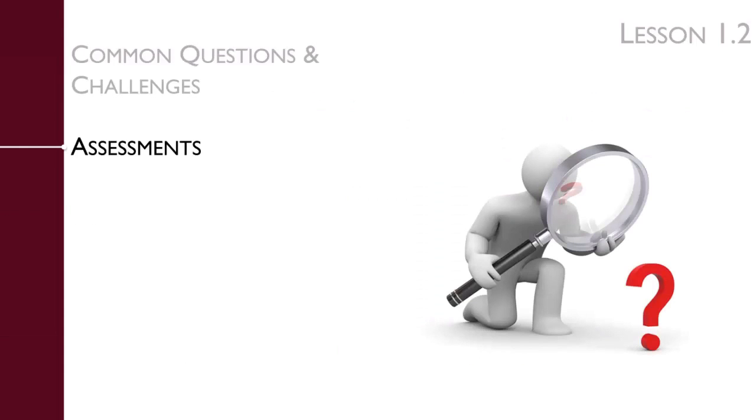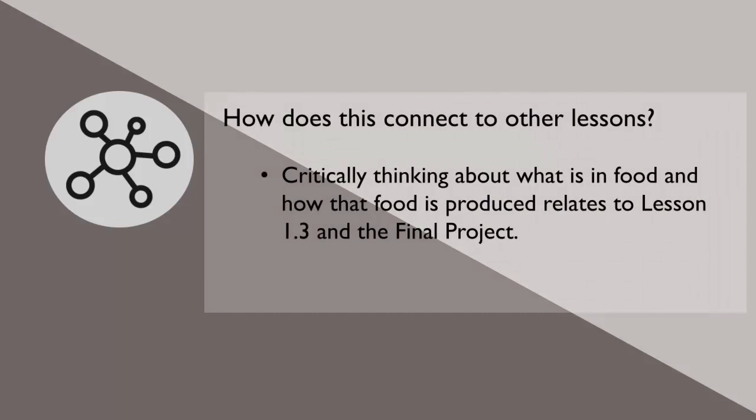At the end of the lesson, students should be able to identify some food additives on an ingredients list and describe the purposes of those additives in food production. Students should also be able to argue the pros and cons of food additives. The most important point students should take away from this lesson is thinking critically about what is in their food and how that food is produced. They will use that thinking again in lesson 1.3 and in the module's final project.